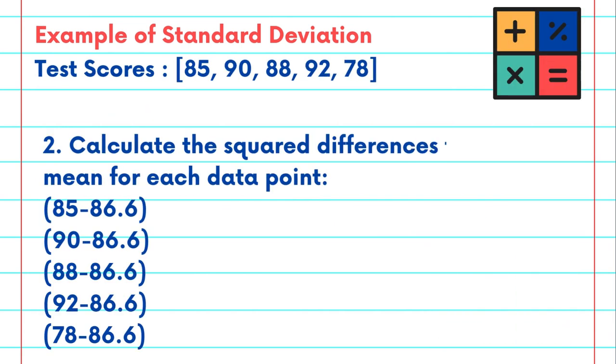The second step in solving for the standard deviation will be to calculate the squared differences from the mean for each data point. So simply we are trying to solve for the distance between each data point in our sample and the mean. So in order to do this we'll simply subtract the mean from each of the data points in our sample, which you can see here.